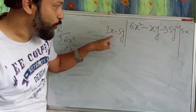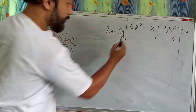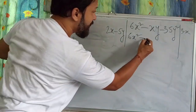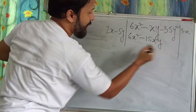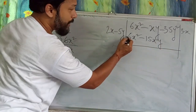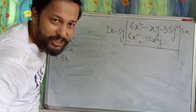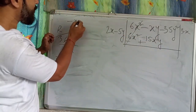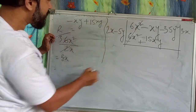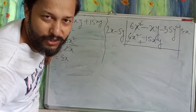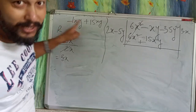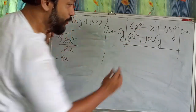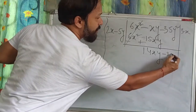By 3x, multiply both terms: 3x times 2x gives 6x², and 3x times minus 5y gives minus 15xy. Change the sign — plus becomes minus, minus becomes plus. Plus 6x² minus 6x² cancels. Then minus xy plus 15xy: minus 1 plus 15 gives plus 14. So we get plus 14xy minus 35y².